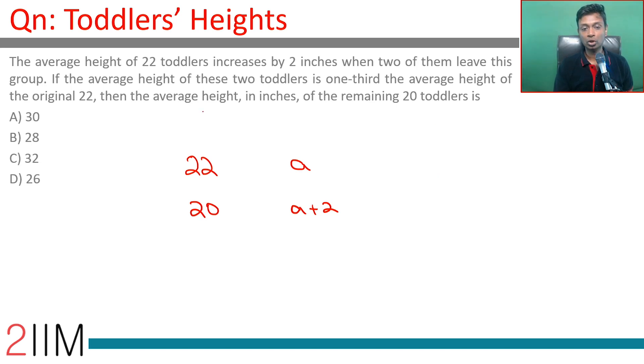This is the number, this is the average, or the total height would have been 22a. Now the total becomes 20 into a plus 2, but two people have left. The two who leave have average height one-third the average height of the original 22, that means a by 3.